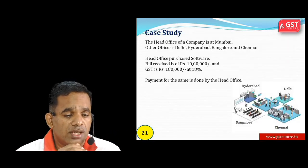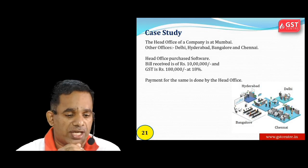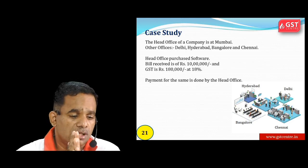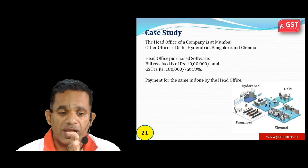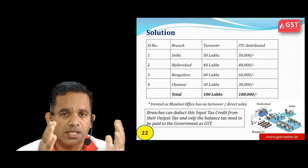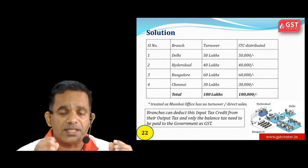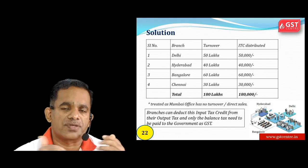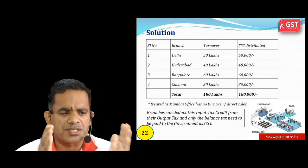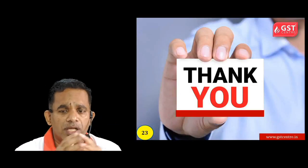Case study: A company's head office is in Mumbai and other offices are in Delhi, Hyderabad, Bangalore, and Chennai. The head office purchased software, received a bill of Rs. 10,000 and paid GST at 18% = Rs. 1,80,000. The Mumbai head office will distribute this input tax credit to the Delhi, Hyderabad, Bangalore and Chennai offices in the ratio of their turnover. The Mumbai office will also issue an ISD invoice (Input Service Distributor invoice).